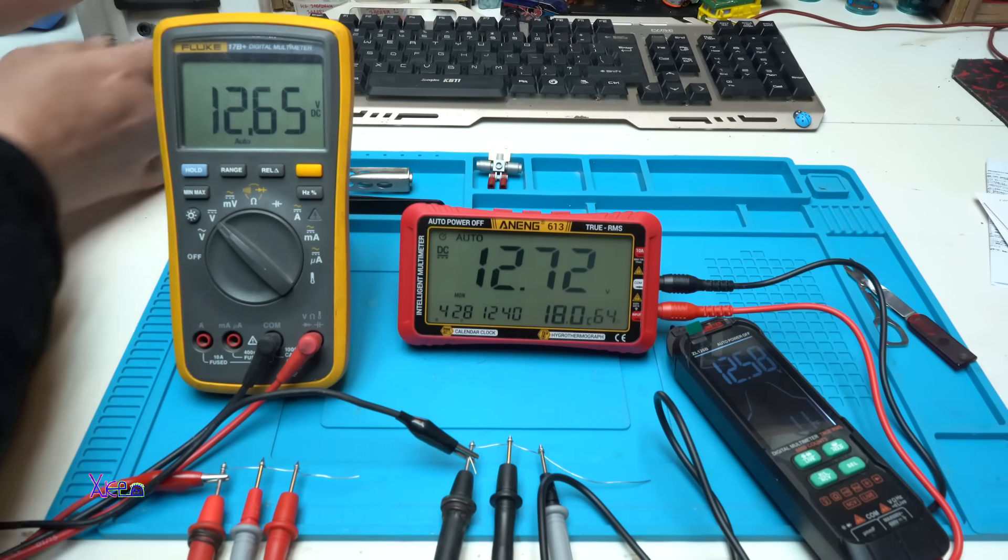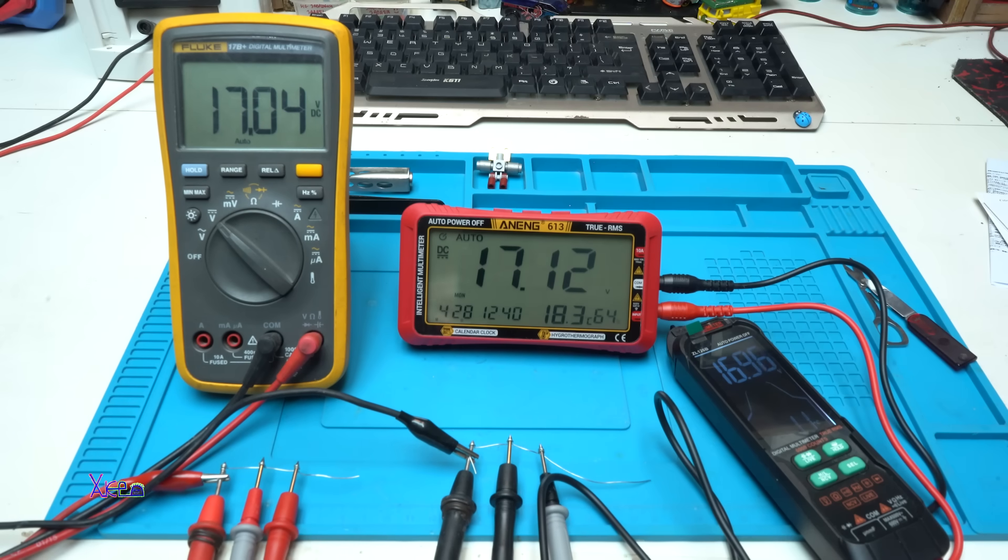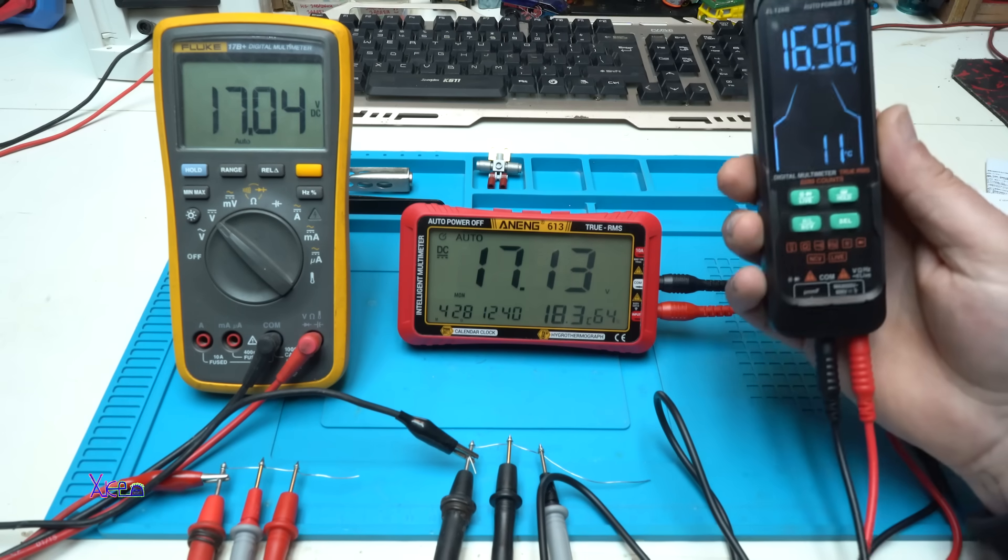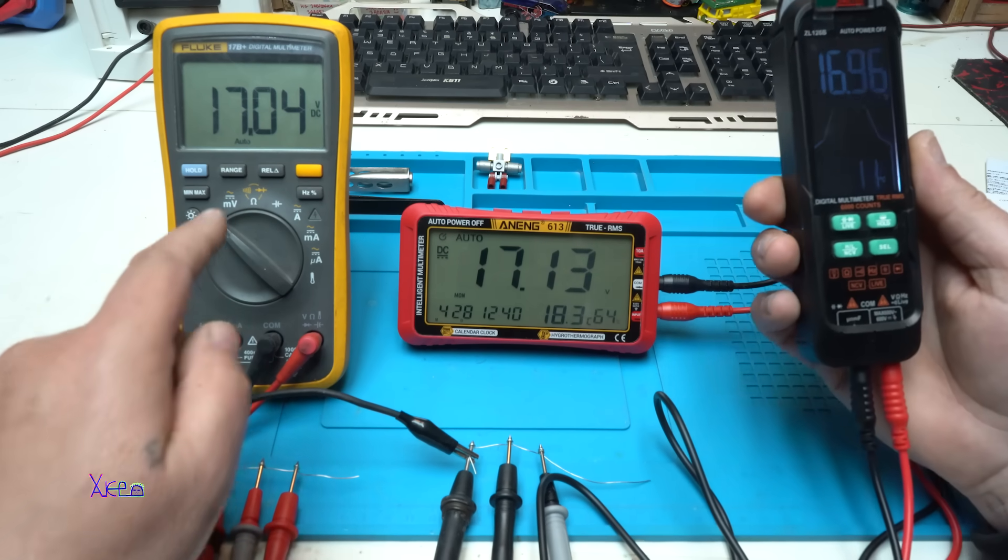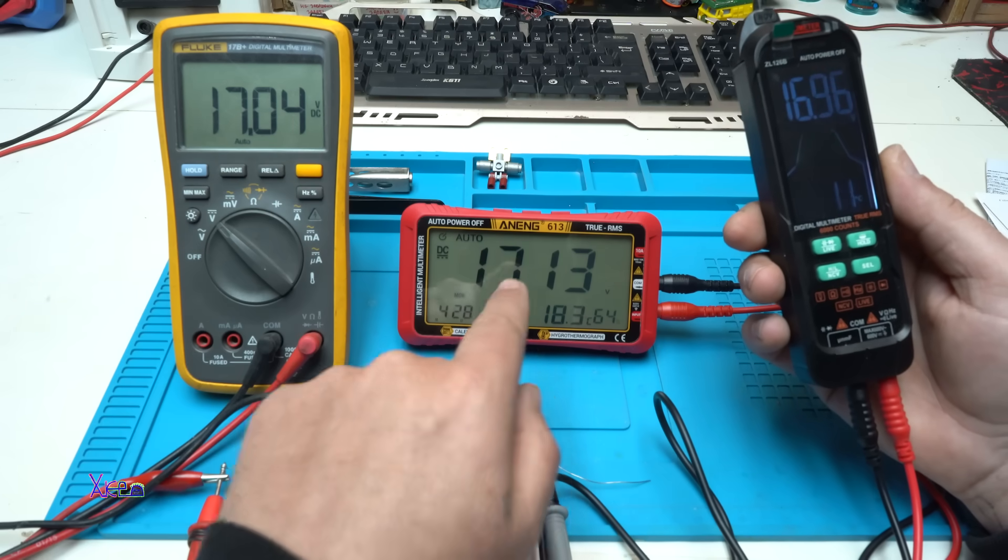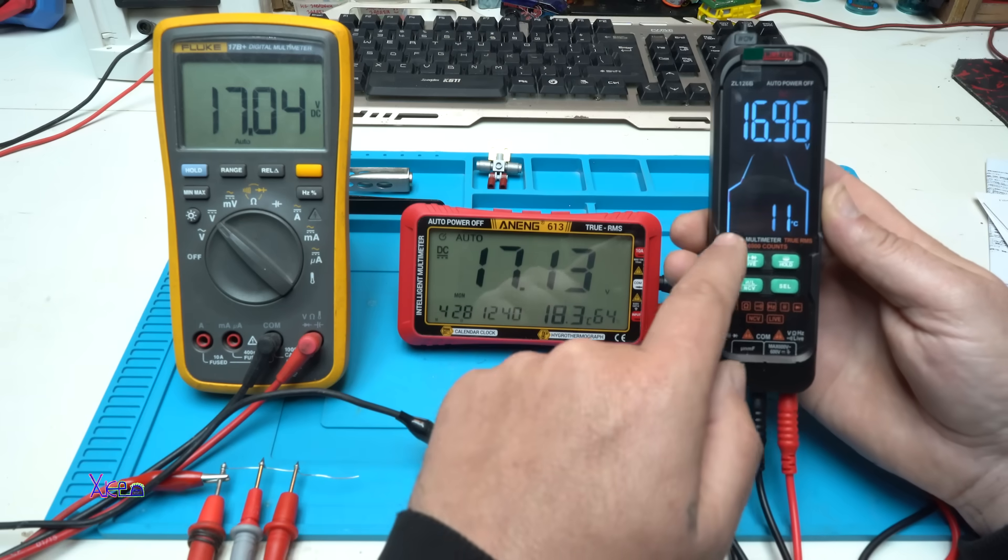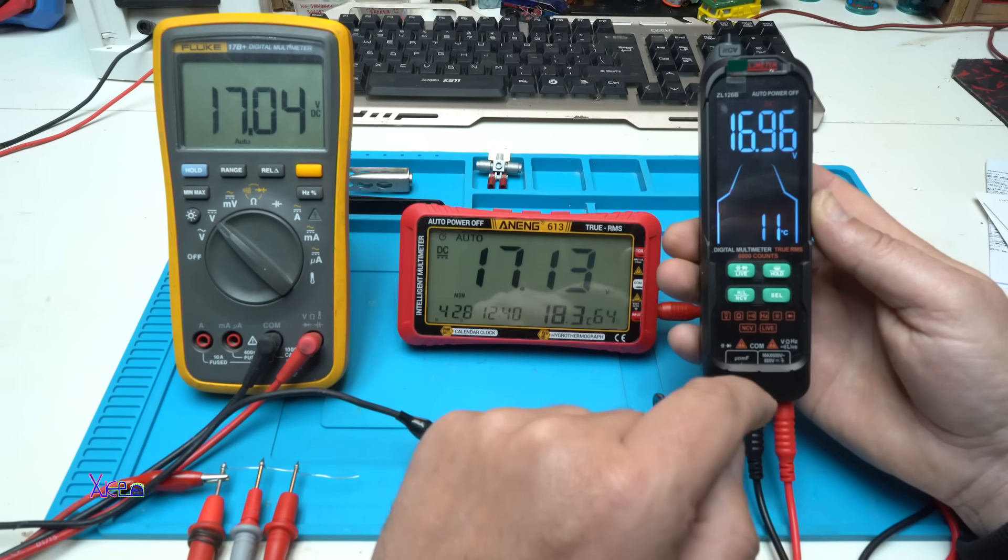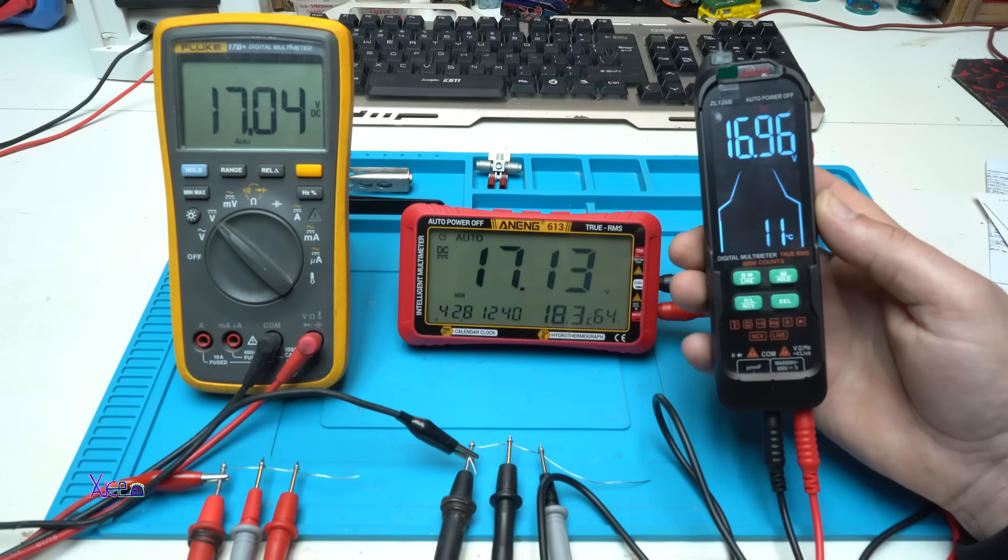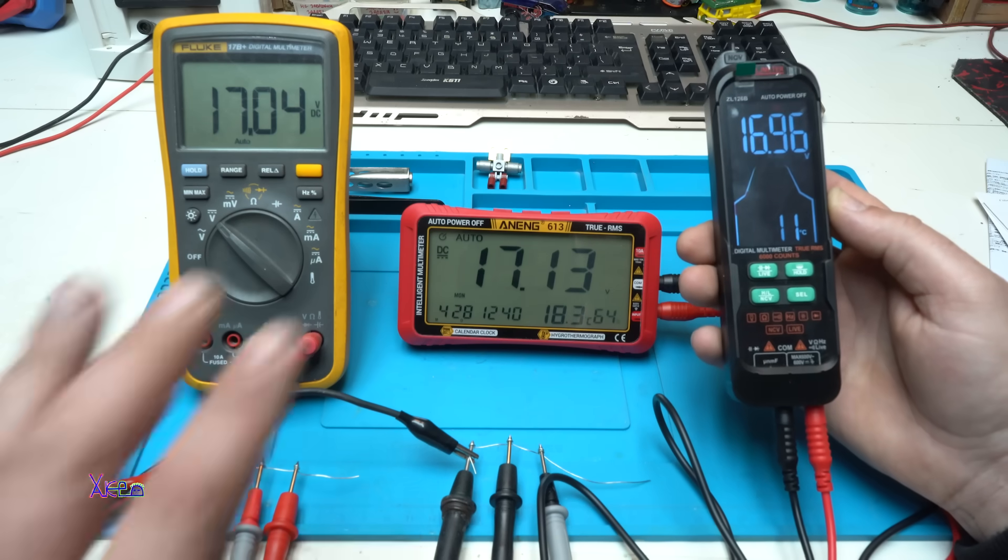Just to increase the voltage, let's say I'm going to go with 17 volts, 17.1. Now the Fluke shows 17.04, that is close. 17.13. And this one shows 16.96 volts. It's pretty close.